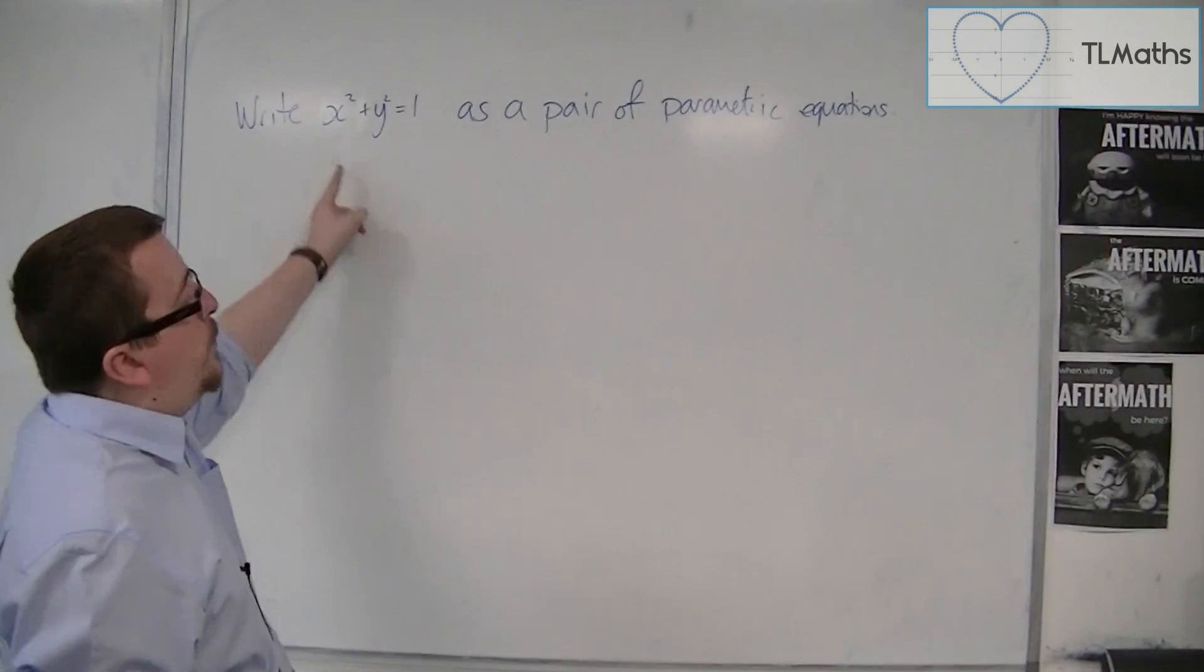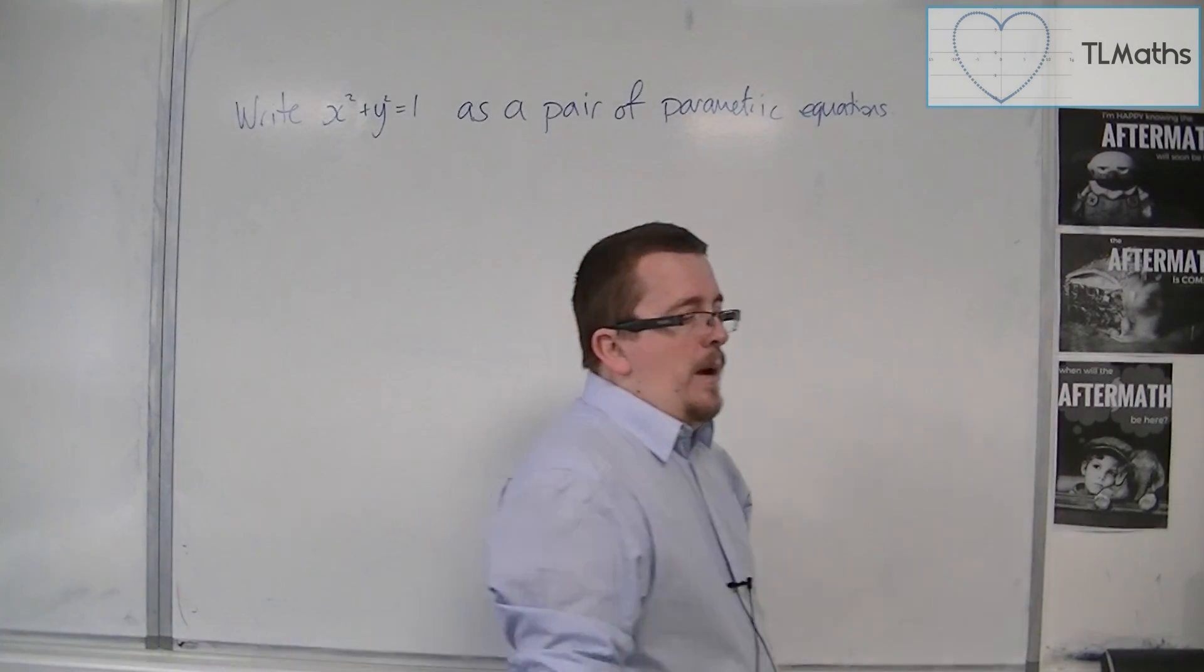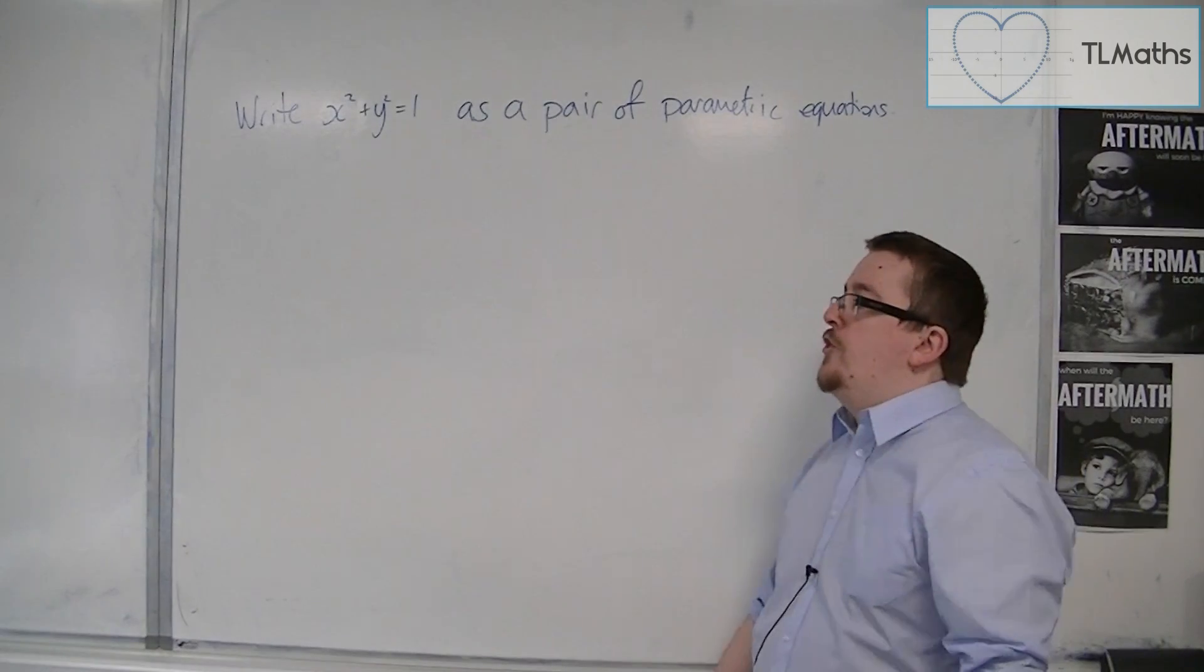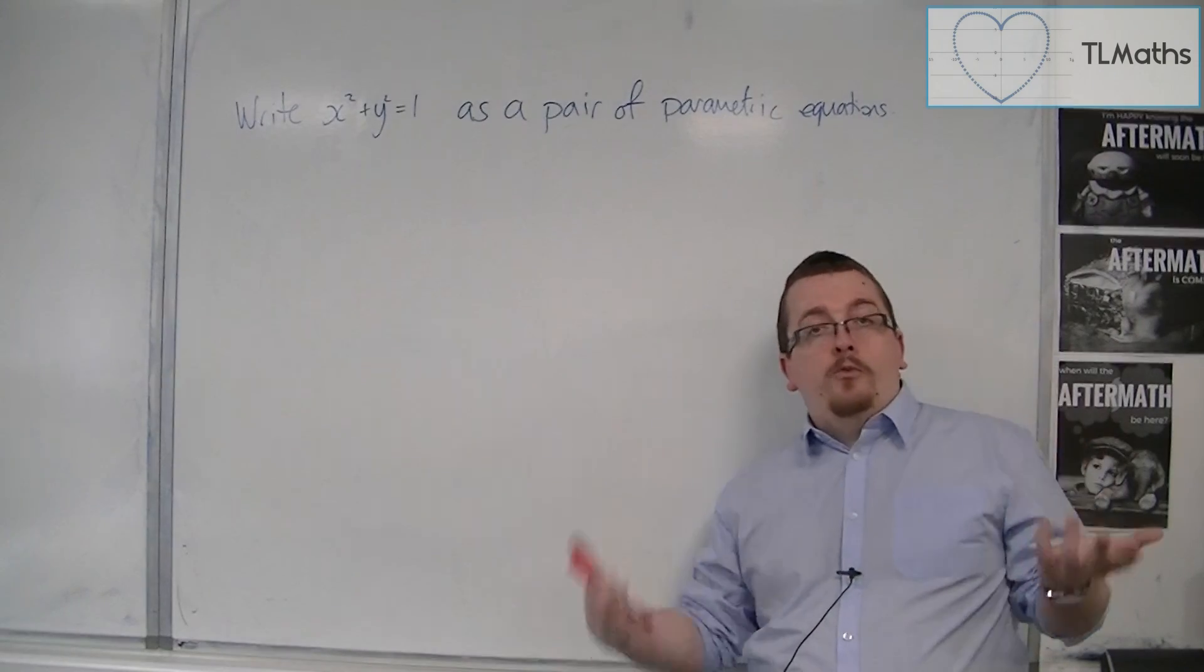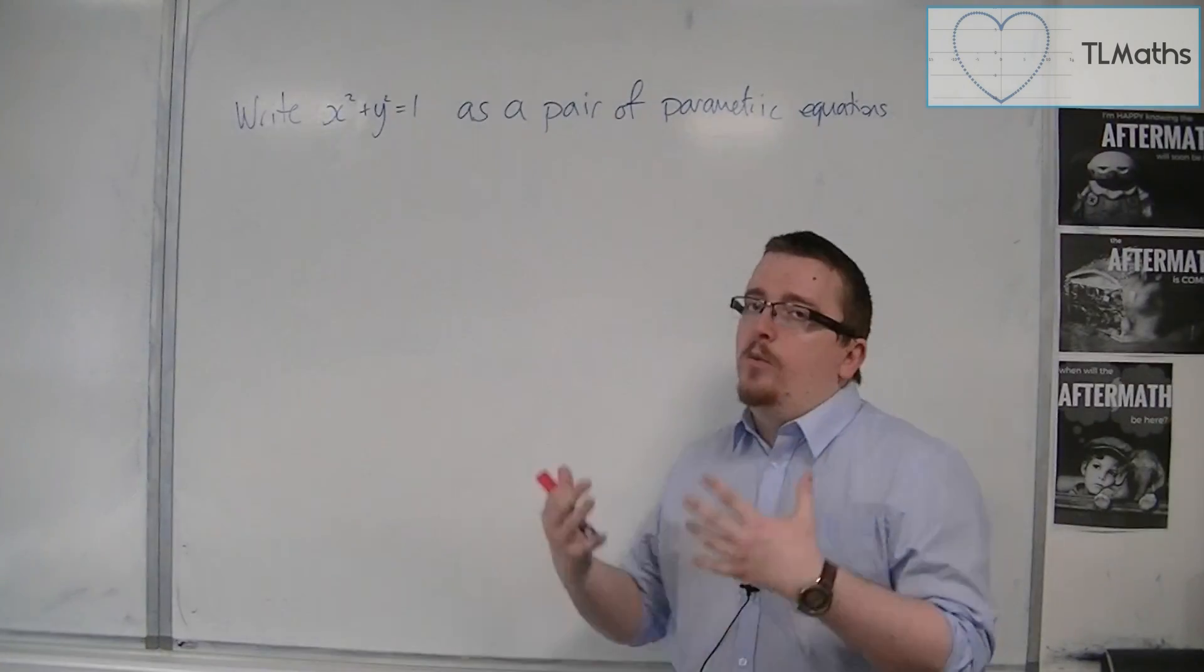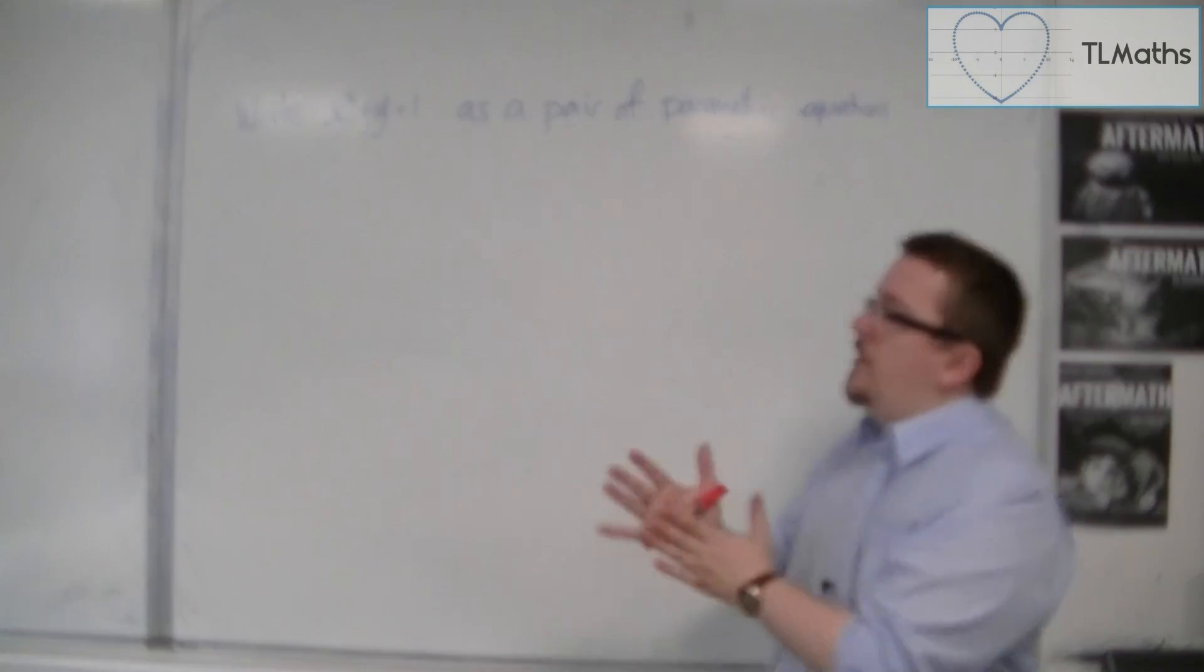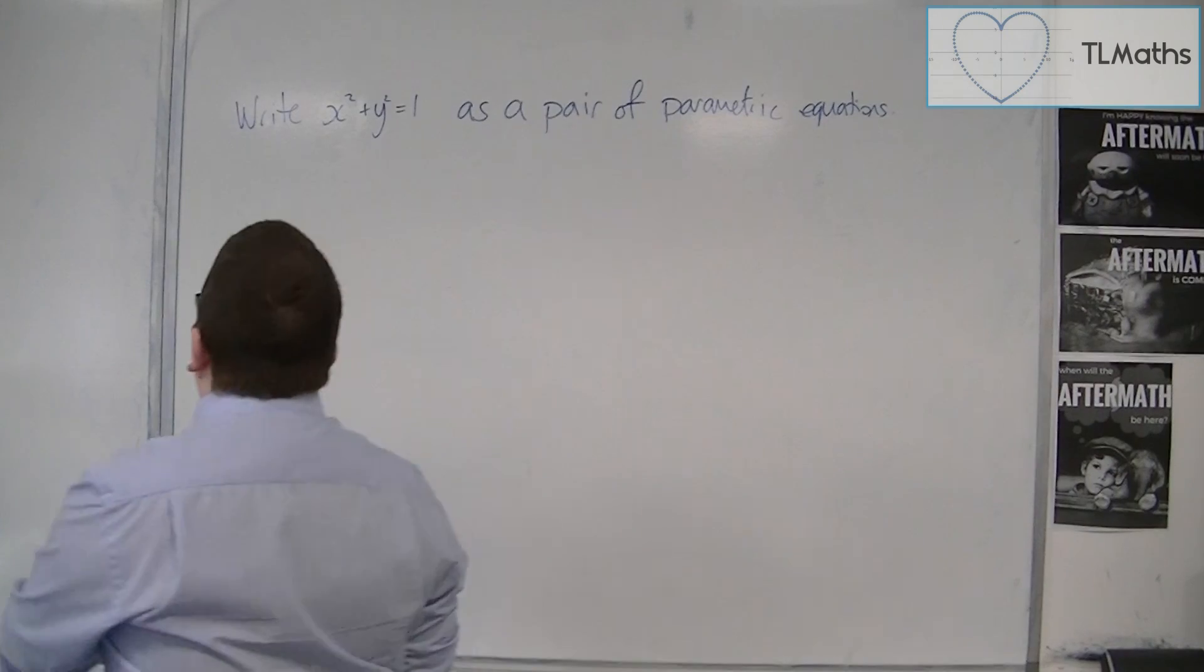So this time we're going to write this equation, which we know is the equation of a circle. We're going to write that as a pair of parametric equations, but we want to avoid square rooting and bringing about this plus minus. So how could we go about this?